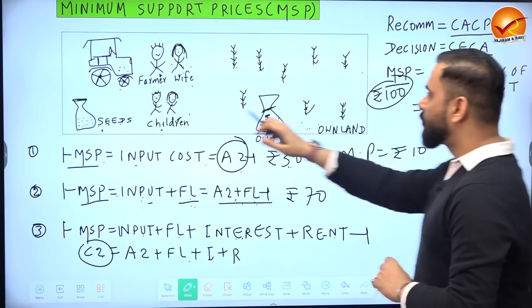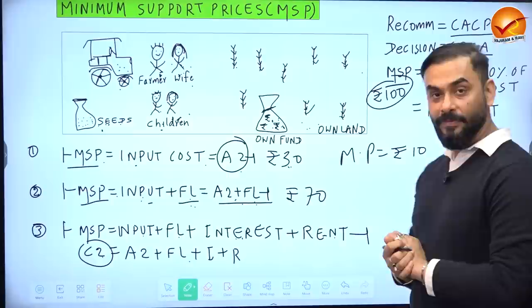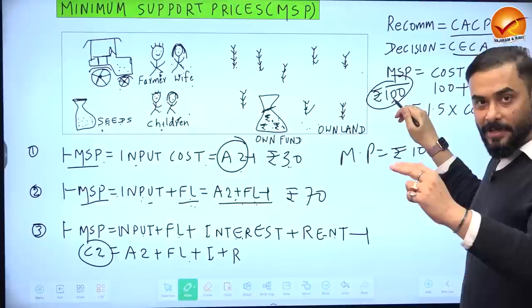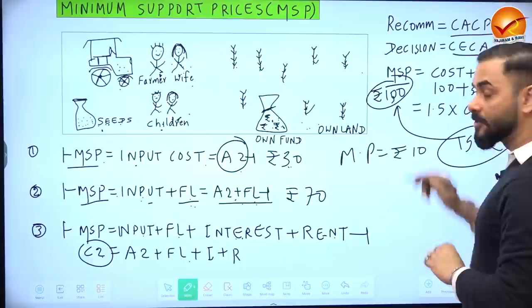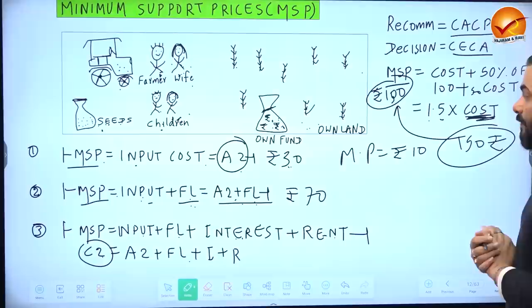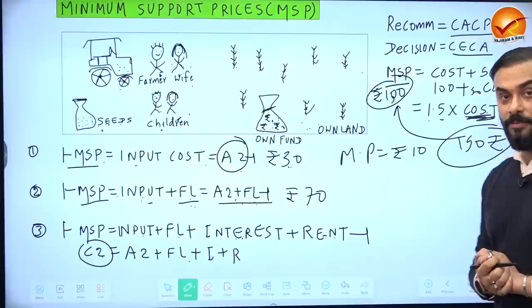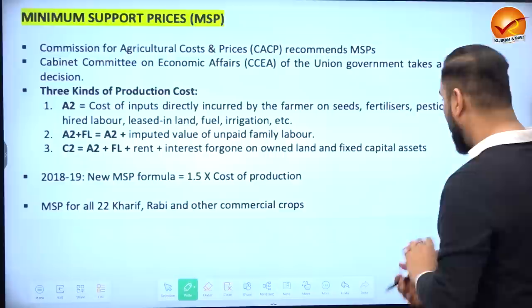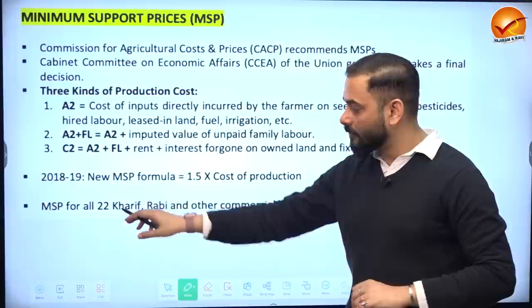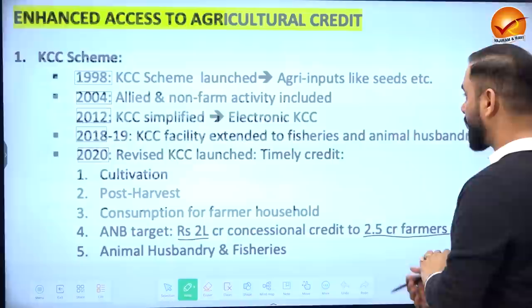So the formula used is: if the cost of inputs plus family labor equals 100 rupees, the government multiplies it by 1.5 to give 150 rupees as MSP. Currently, the government uses A2+FL as the cost base, so 1.5 × 100 = 150 rupees. In India, the government has announced MSP for 22 crops and has increased it.